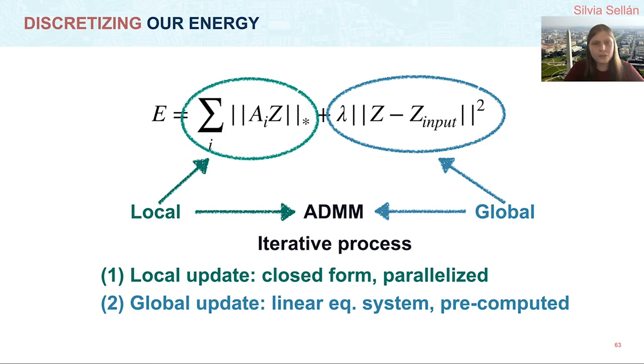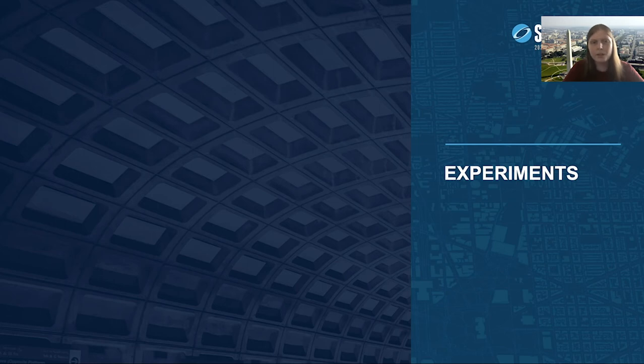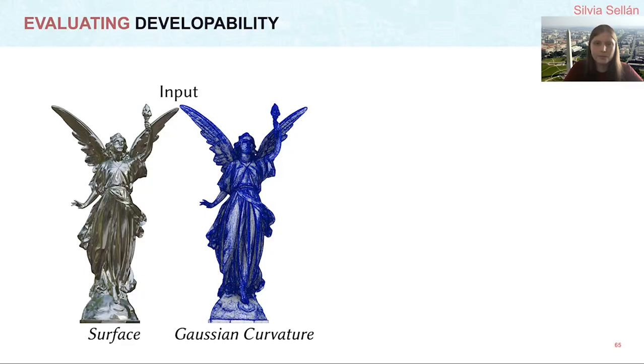We've described our method pretty well. Now it's time to see it in action. Let's begin with some experimental evaluations. Our most basic question is, does our method really output a piecewise developable output? We test this for this non-developable input, which we paint according to the absolute value of the Gaussian curvature. Blue means less developable. Note that our method does not directly minimize Gaussian curvature, so this is a good way of seeing whether our energy is a good proxy for developability.